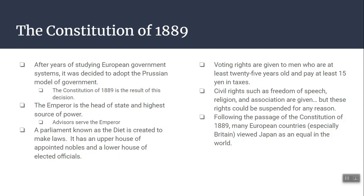Japan gets a constitution in 1889. After studying European governments they choose the Prussian/German model — the emperor stays head of state with the highest power, supported by advisors. A parliament called the Diet is created to help make laws, with an upper house of nobles and a lower house of elected officials. Voting rights go to men at least 25 years old. Civil rights like freedom of speech, press, and religion are included — but with an asterisk allowing them to be suspended for any reason. After 1889, many European countries view Japan as an equal.